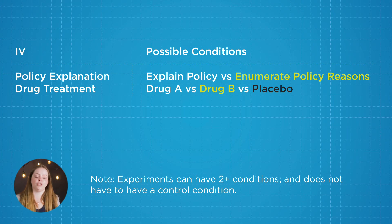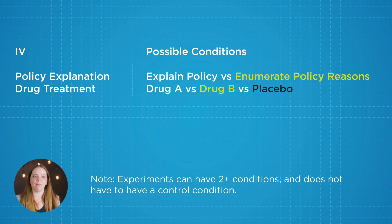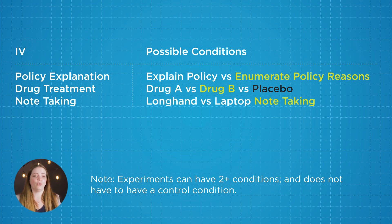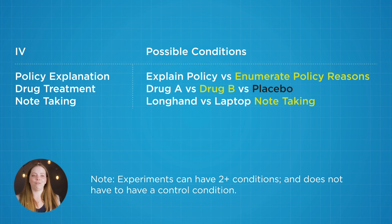If our independent variable is drug treatment, the treatment group is the people who actually received that drug, and the control condition is a placebo condition where they get an inactive pill. Another example might be types of note-taking — you don't necessarily need a treatment and control condition. You could compare two different types of treatment, such as taking notes using a laptop versus using pen and paper, and measure the differences in recall of information.